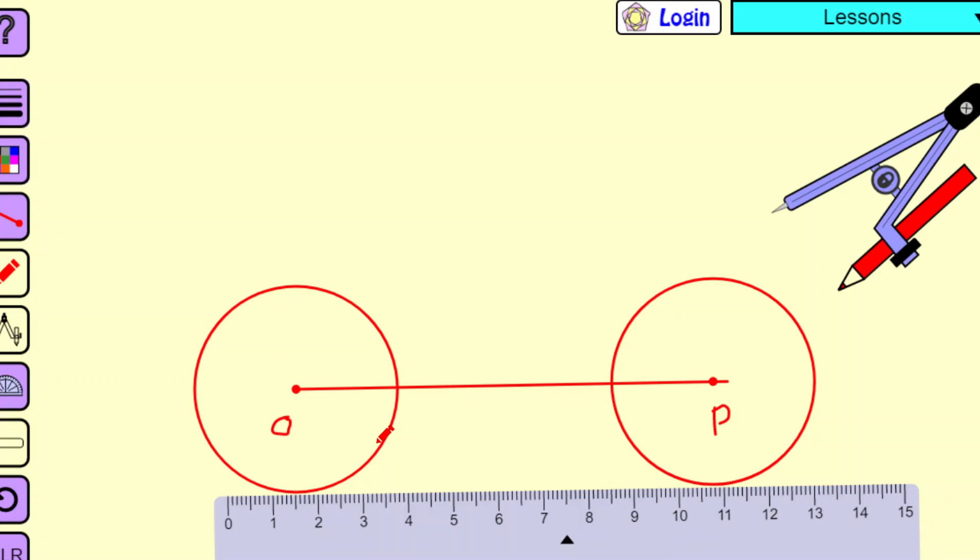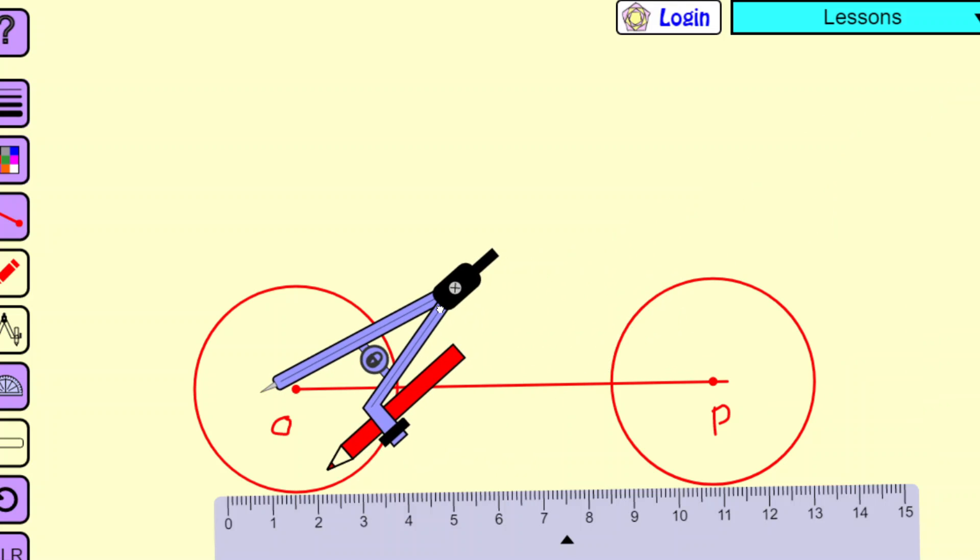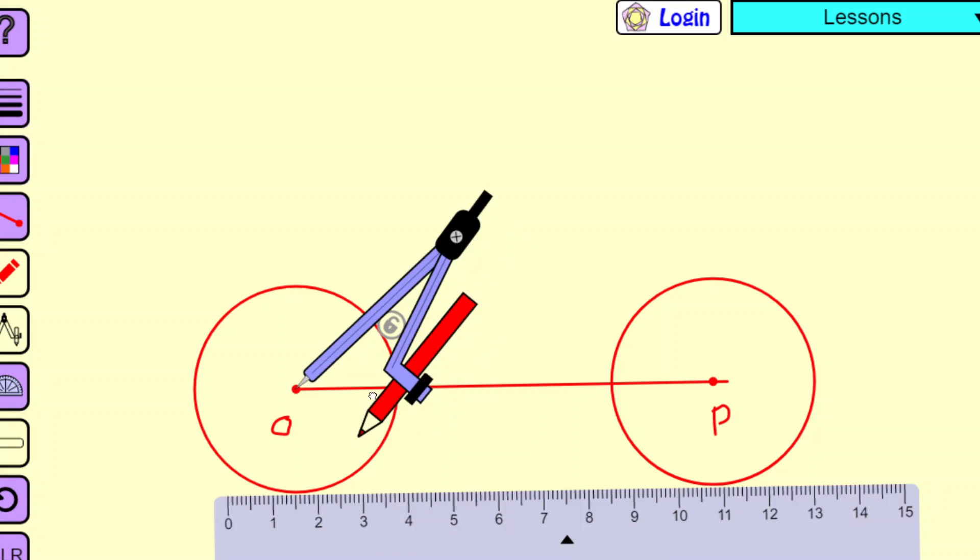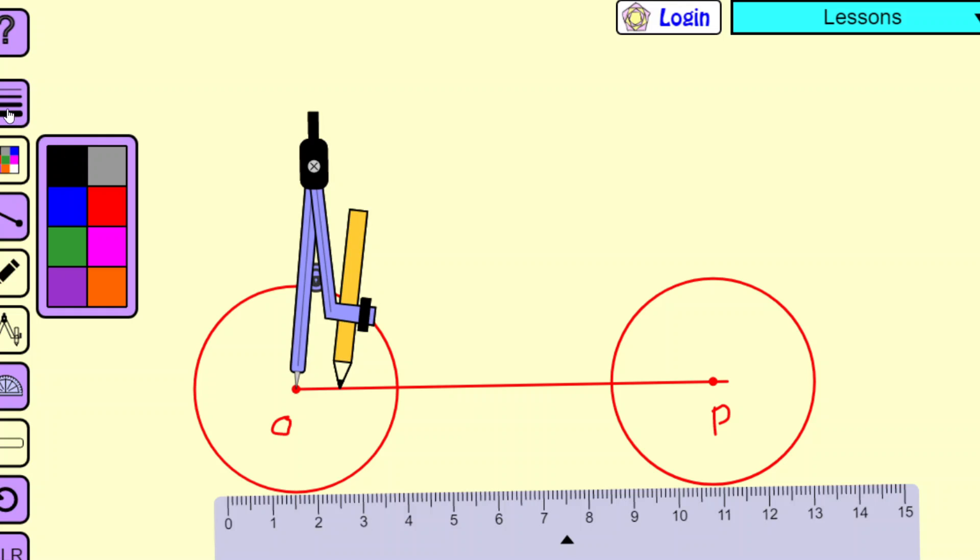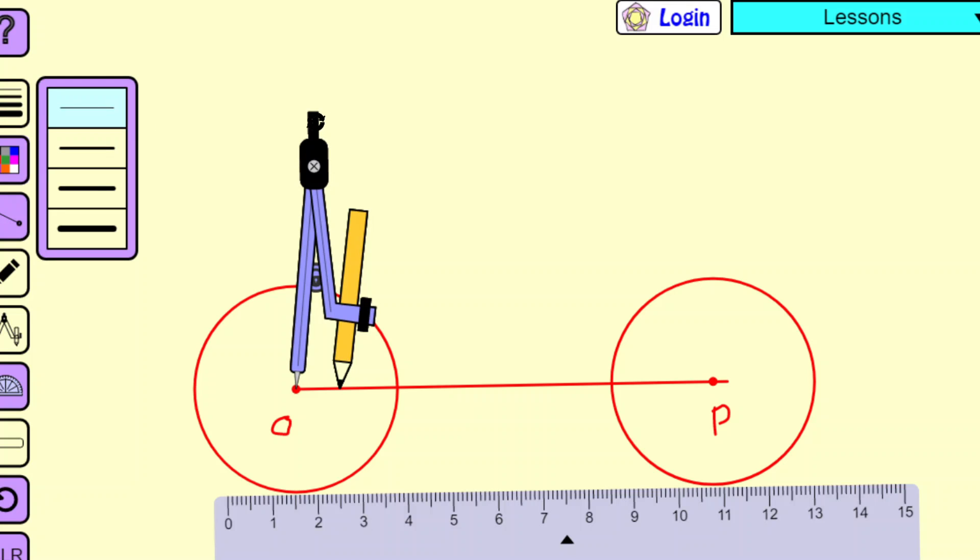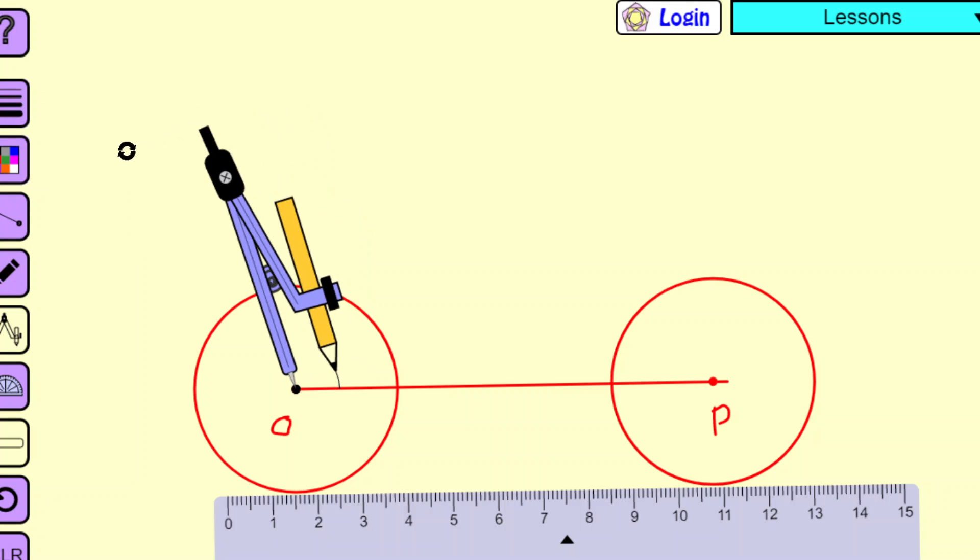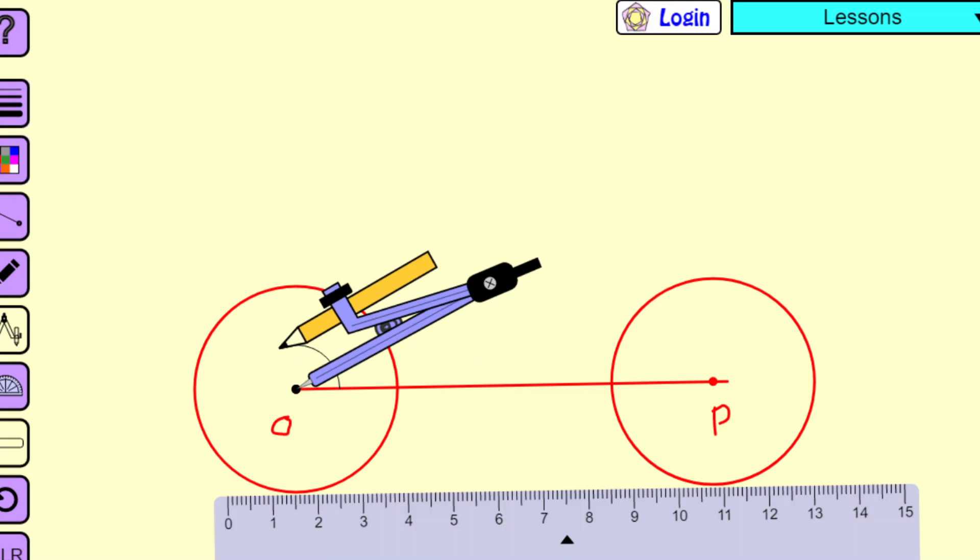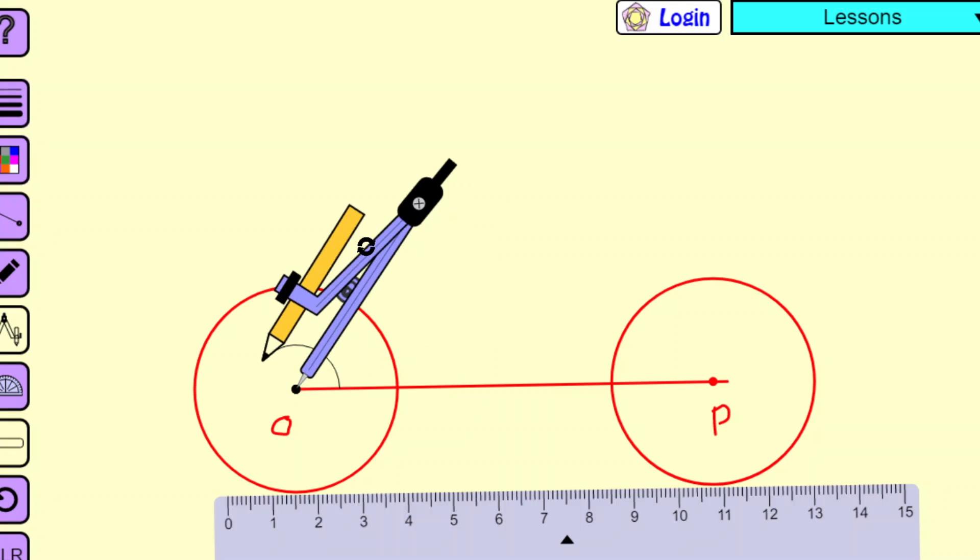Now our objective is to draw the perpendicular at O and P. So to draw the perpendicular at O, I will use the compass again. Take any radius which is lower than that. Take a different color, I will take a black color. Draw an arc.